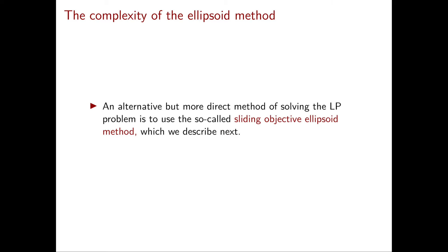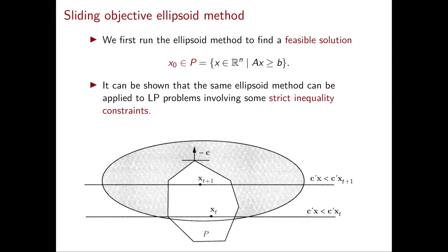Next, we are going to discuss an alternative way to solve the linear programming optimization problem by recursively solving feasibility problems. This is a method that doesn't require the construction of the dual, and is called the sliding objective ellipsoid method. In the sliding objective ellipsoid method, we start by solving the most obvious feasibility problem — namely, we run the ellipsoid method to find simply a feasible solution, if any exists. Let's say that our ellipsoid method finds a vector x0 in our polyhedron P.